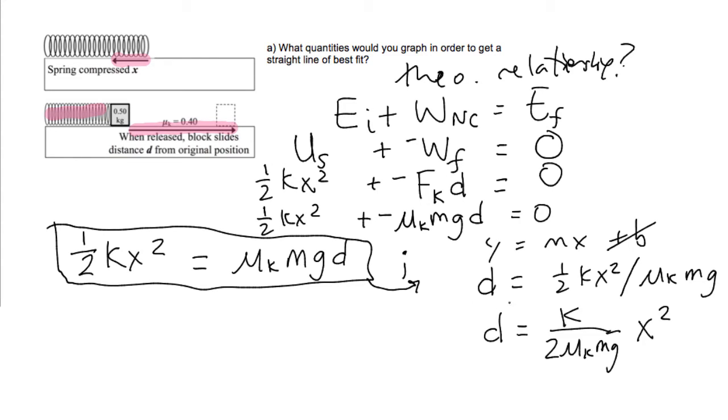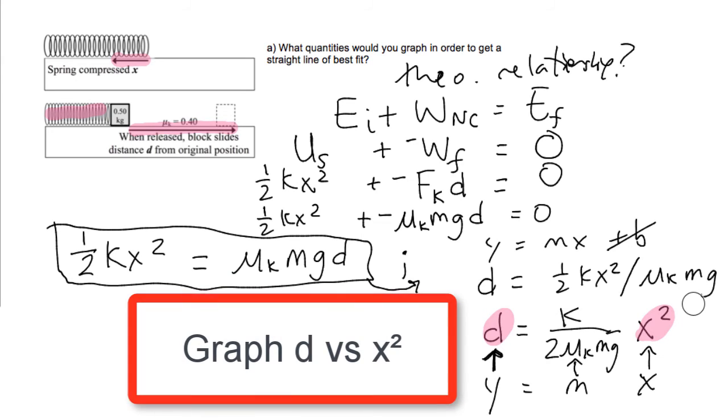And I'm going to write this now like so. So now what I've got is I've got it in this y equals mx plus b form. The d is on my y-axis. The x squared is actually on my x-axis. It is a bit confusing using this generalized y equals mx form for this, because there is an x in my theoretical equation. But nevertheless, on the horizontal axis, I'm going to have x squared. So it's clear that what I need to graph is d versus x squared. So the answer to this part is graph d versus x squared.